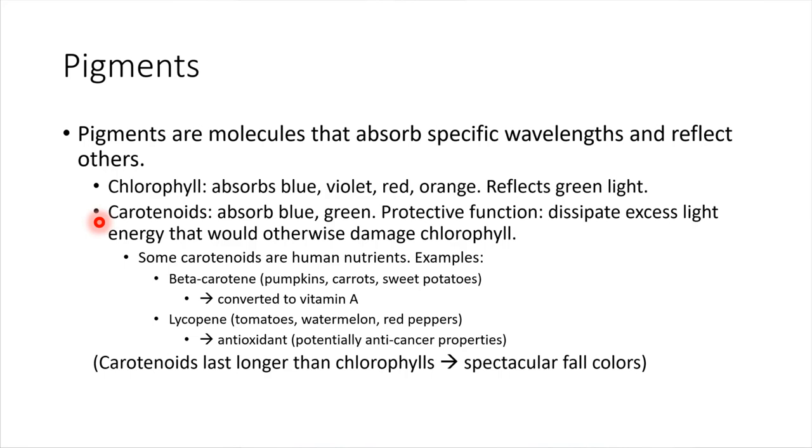In fact, some of them are very important human nutrients as well. We include plant material in our diets. And some of these carotenoid pigments do very important things. A couple of perhaps familiar examples. Maybe you've heard of beta-carotene or lycopene. Those are two examples of carotenoid pigments that are great to have in your diet. Beta-carotene, we can get this from eating pumpkins, carrots, sweet potatoes, think orange, orange colored things. And in our bodies, what that gets converted to is a vitamin, vitamin A.